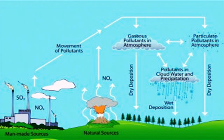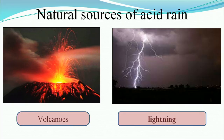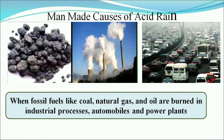These gases build up as gaseous pollutants in the atmosphere, along with particulate pollutants. They may drop as dry deposition or, when combined with cloud water precipitation, form wet deposition. Natural sources of acid rain include volcanoes and lightning. Man-made causes are burning of fossil fuels like coal, natural gas, and oil in industrial processes, automobiles, and power plants.